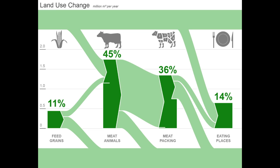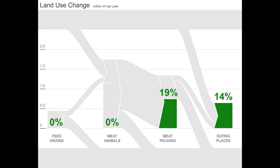From a final consumption perspective, if we only focus on goods and services sold directly to consumers and government purchasers, we can see that consumer and government demand for meat packing is responsible for 19% of all land use change impacts across the entire economy. Another 14% of all land use change impacts in the U.S. economy are generated in response to consumer and government demand for the services of eating places.